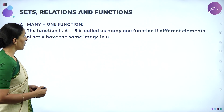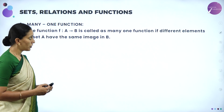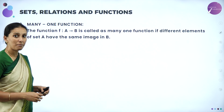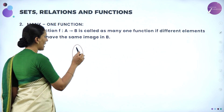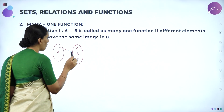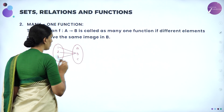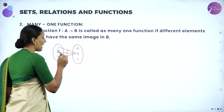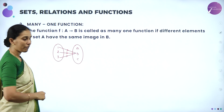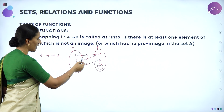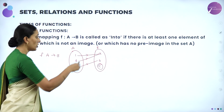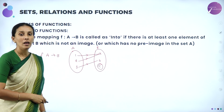Next, many-one function. A function f from A to B is called many-one if different elements of set A have the same image in set B. For example, with A = {1, 2, 3} and B = {a, b, c}, connecting 1 to b, 2 to b, and 3 to b: all elements have the same image b, but each has only one image. So this is a many-one function. Similarly, in the previous example where 1 and 2 both map to a, they share the same image, so that is also a many-one function.